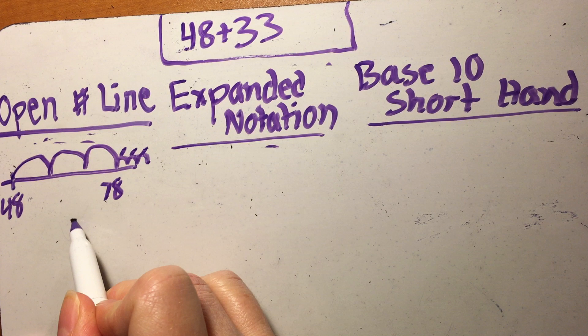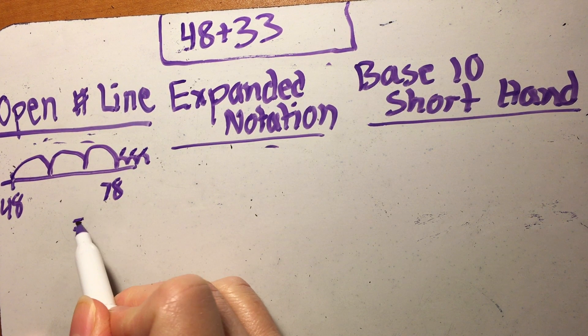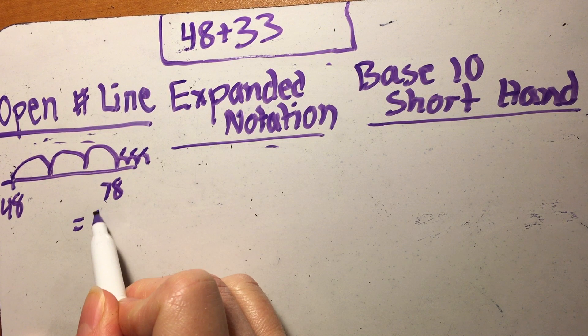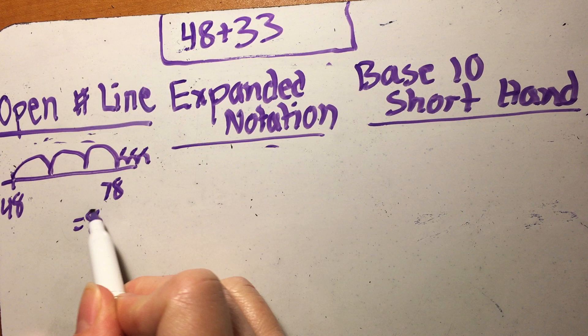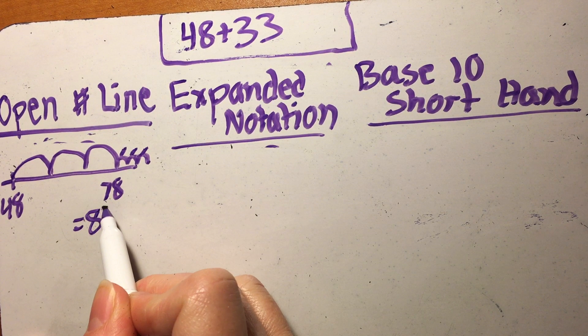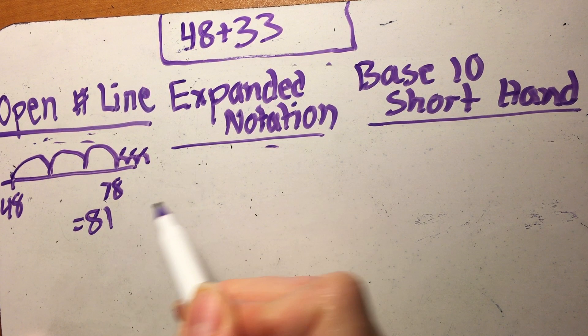So that's how that works for adding by tens with the open number line. Some of your kids prefer that strategy. What we've been trying to do is trying to learn it with different strategies because what happens is they get comfortable with one strategy and they think they don't want to try it another way, but then they try it another way and they find out it actually works really well.